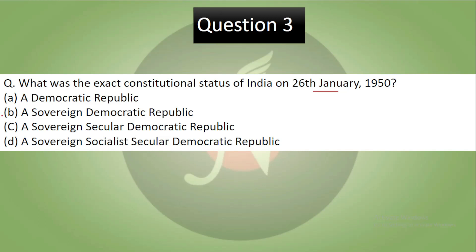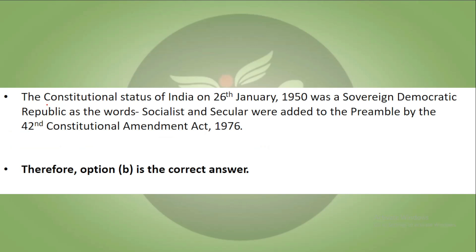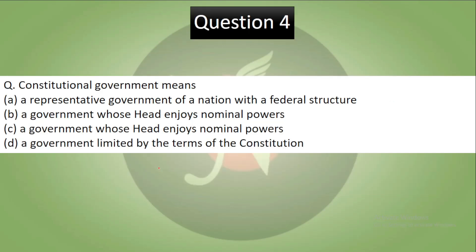The correct answer is B. The words 'socialist,' 'secular,' and 'integrity' were added by the 42nd Constitutional Amendment Act of 1976. So the correct status on 26th January 1950 was sovereign democratic republic. B is your answer.